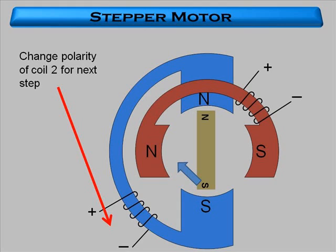To make the motor move another step, the polarity of the other winding is reversed and the magnet will make another step.